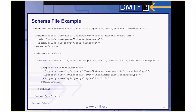Within the namespace, a complex type is defined called MyDataType. That complex type contains three properties: MyProperty, which has an underlying type of external namespace dot reference data type; MyProperty2, which has an underlying type of other dot namespace dot other data type; and MyProperty3, which has an underlying type of EDM dot int64. The definitions for reference data type and other data type will be found in externalschema.xml, since they are referencing external namespaces. EDM dot int64 is simply a 64-bit integer.